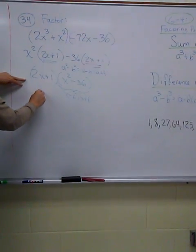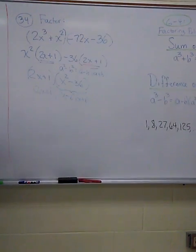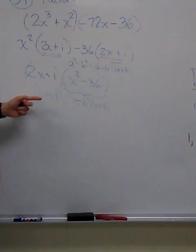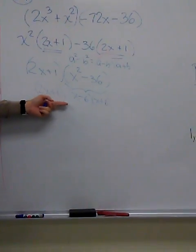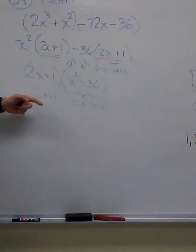And then you're going to have a 2x plus 1. And so our factors would be 2x plus 1, x minus 6, x plus 6. And if you want to do a quick check, you could multiply these out, and it will give you all of this right here. And that would be the video.